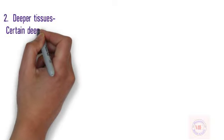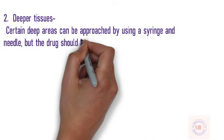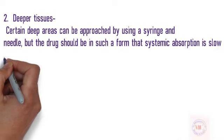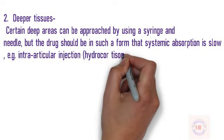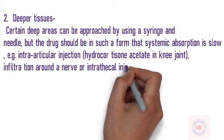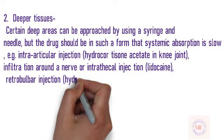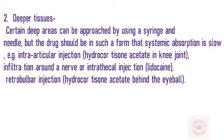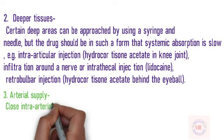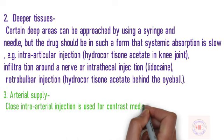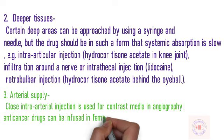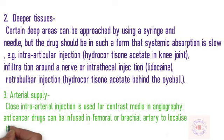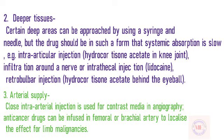Deeper tissues: Certain deep areas can be approached by using a syringe and needle, but the drug should be in such a form that systemic absorption is slow. E.g. intra-articular injection of hydrocortisone acetate in knee joint, infiltration around a nerve or intrathecal injection of lidocaine, retrobulbar injection of hydrocortisone acetate behind the eyeball. Arterial supply: Close intra-arterial injection is used for contrast media in angiography; anti-cancer drugs can be infused into femoral or brachial artery to localize the effect for limb malignancies.